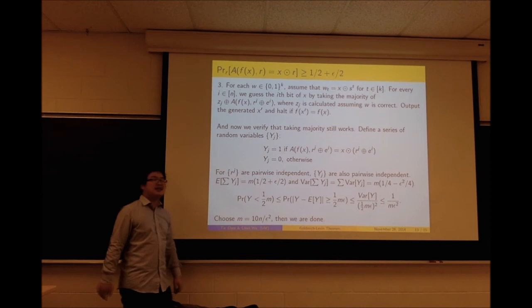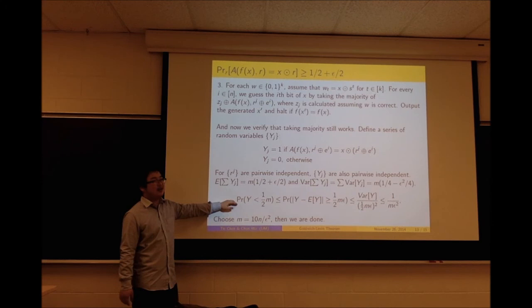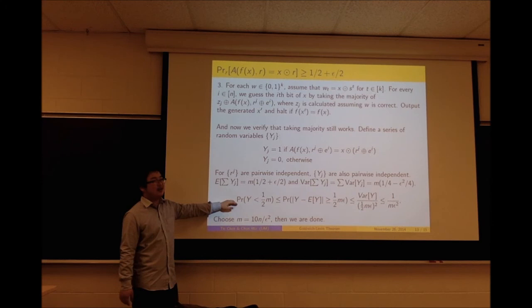We have proven that if we can compute x dot r with probability greater than 1/2 plus ε, we can recover x. We can recover x for all good x, which violates the definition of a one-way function. This completes the proof of the Goldreich-Levin theorem.